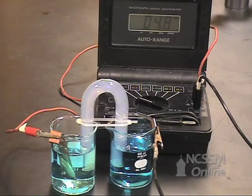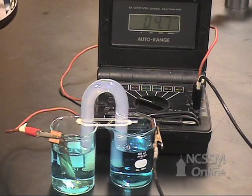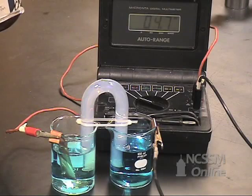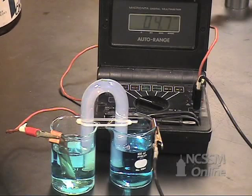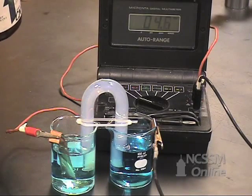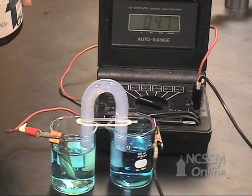We can change the concentration in the half cells by adding a compound that will precipitate copper ion. I'm going to add some sodium sulfide to the right half cell. The sulfide ion will precipitate the copper ion in that solution and reduce the copper ion concentration.